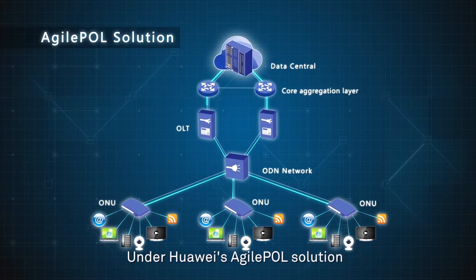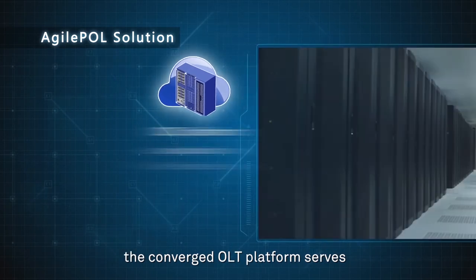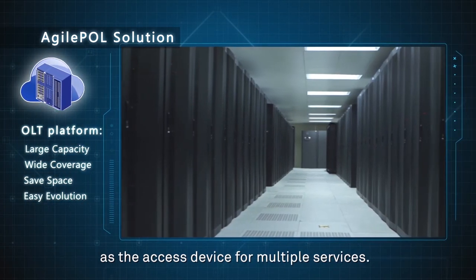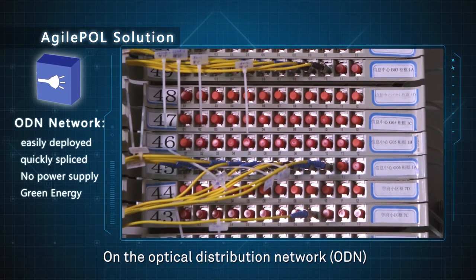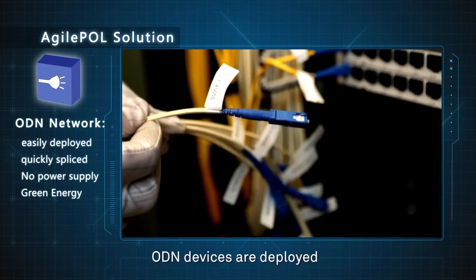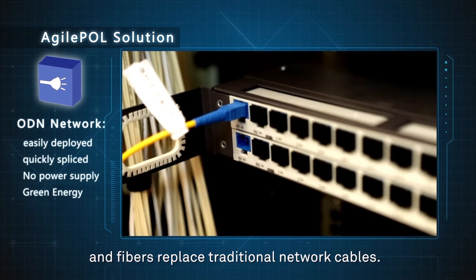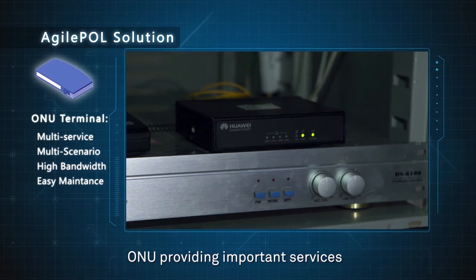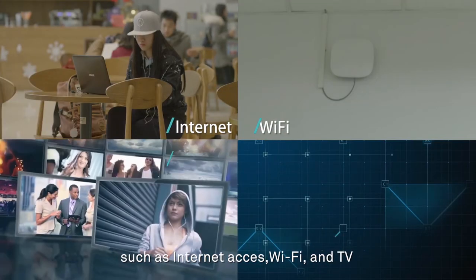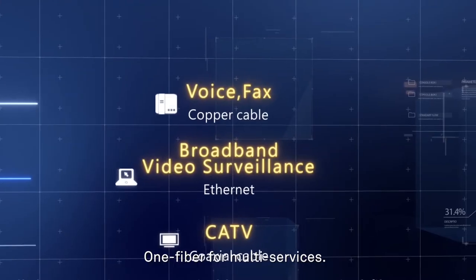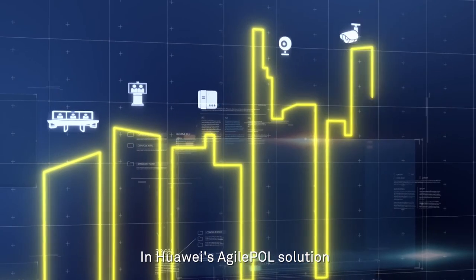Under Huawei's agile POL solution, the converged OLT platform serves as the access device for multiple services. On the optical distribution network ODN, ODN devices are deployed and fibers replace traditional network cables. ONUs provide important services such as internet access, Wi-Fi, and TV — one fiber for multiple services — as key features of Huawei's agile POL solution.